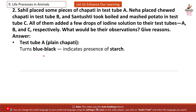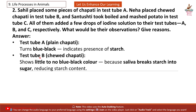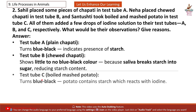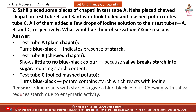Answer: Test tube A — plain chapati turns blue-black, indicating presence of starch. Test tube B — chewed chapati shows little to no blue-black color, because saliva breaks starch into sugar, reducing starch content. Test tube C — boiled mashed potato turns blue-black; potato contains starch which reacts with iodine. Reason: Iodine reacts with starch to give a blue-black color; chewing with saliva reduces starch due to enzymatic activity.